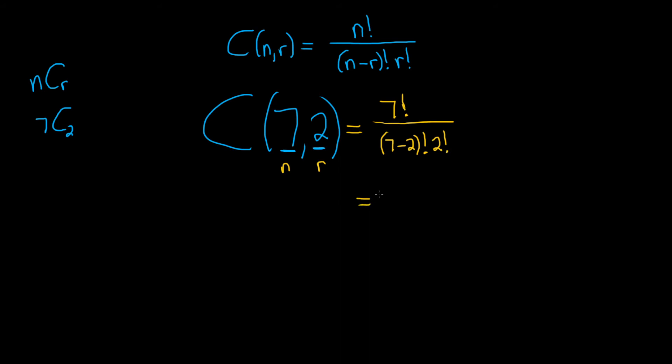This equals 7 factorial over 5 factorial times 2 factorial.